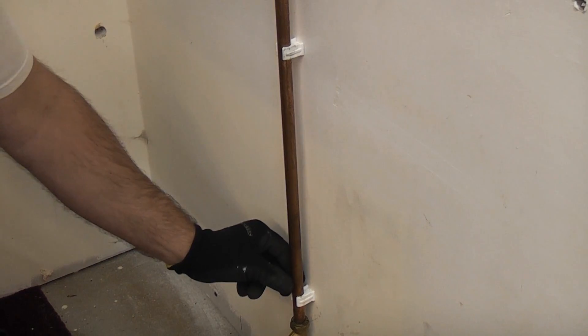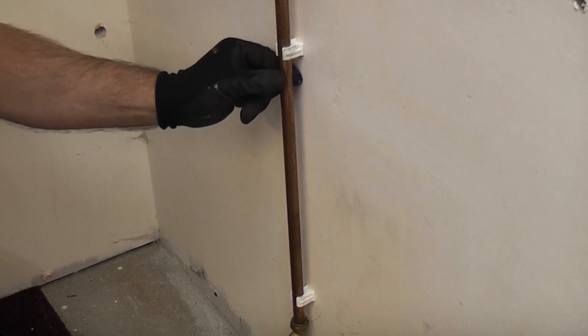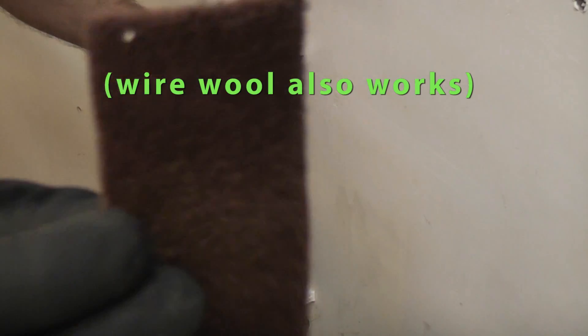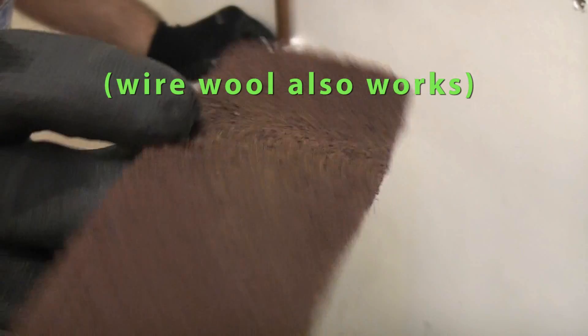The first thing we need to do is clean the pipe. We need to get it nice and shiny so that the clamps make a good electrical contact. To clean it I'm going to use a Scotch-Brite pad.